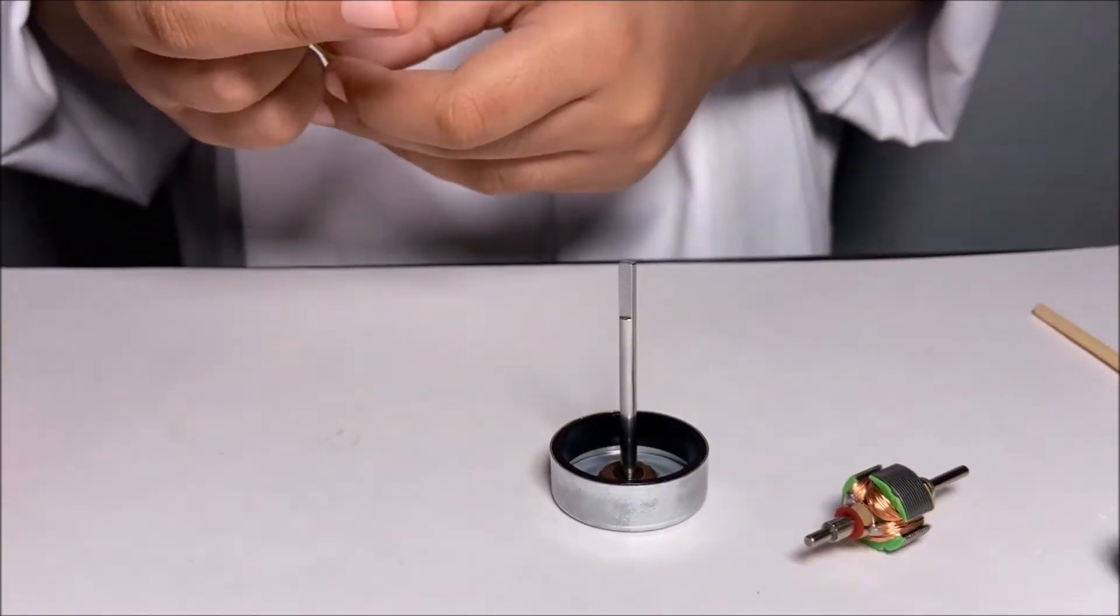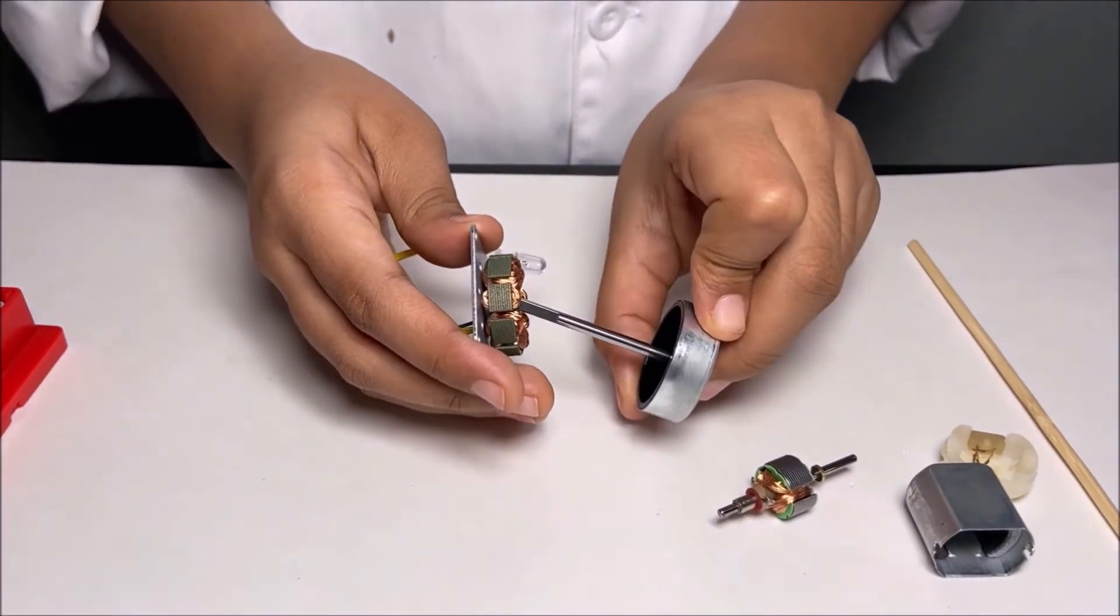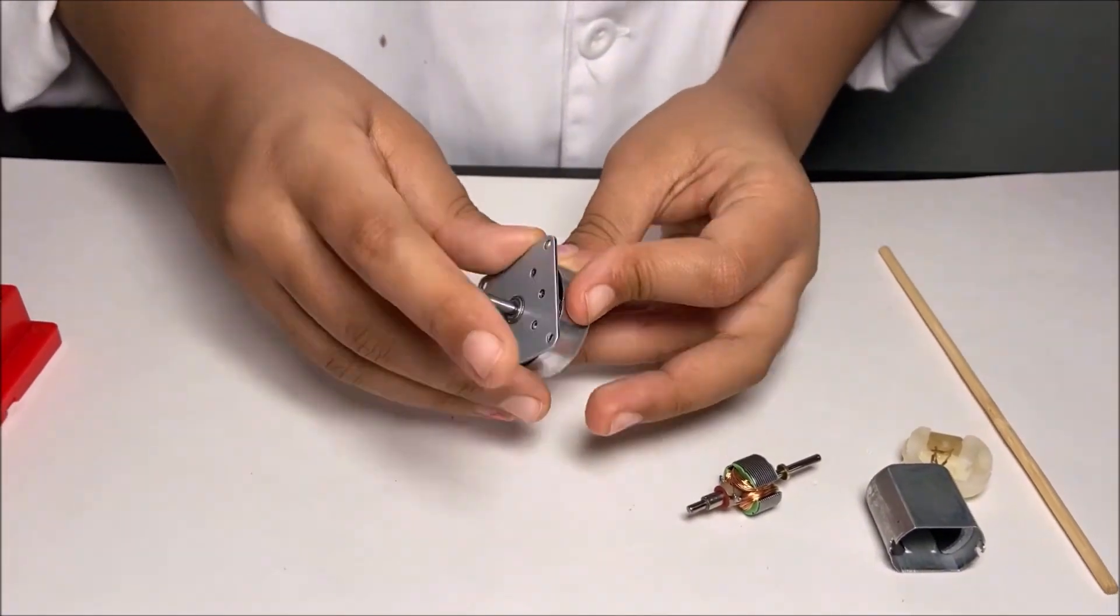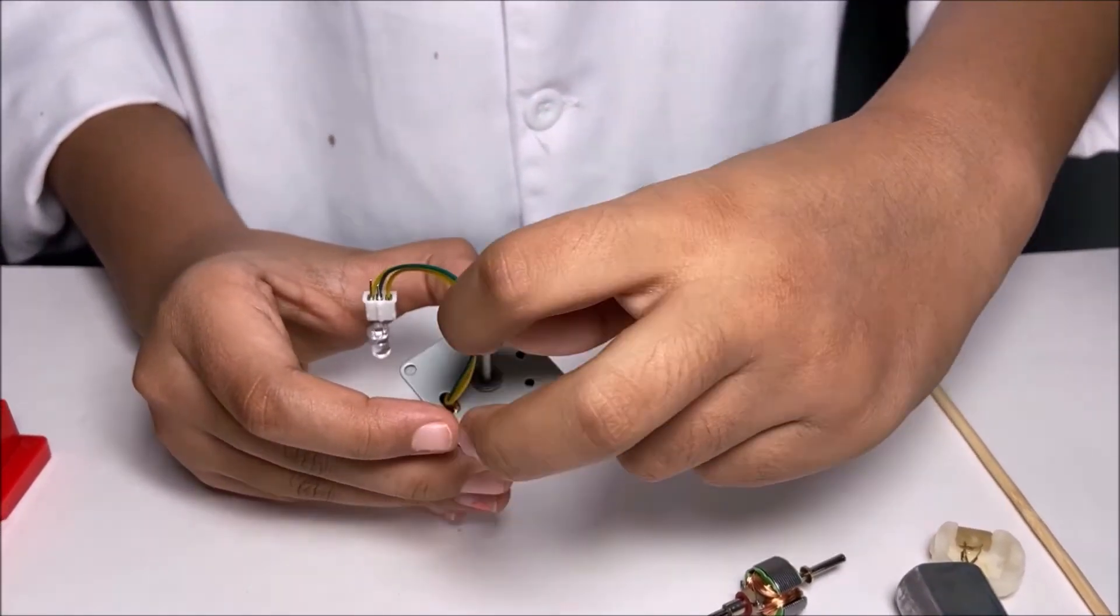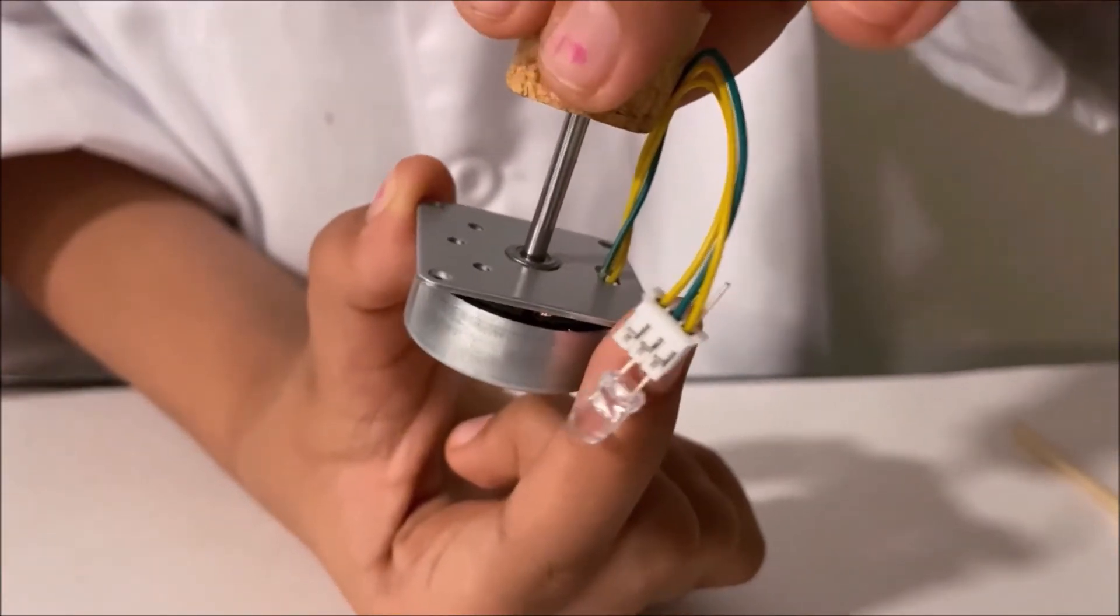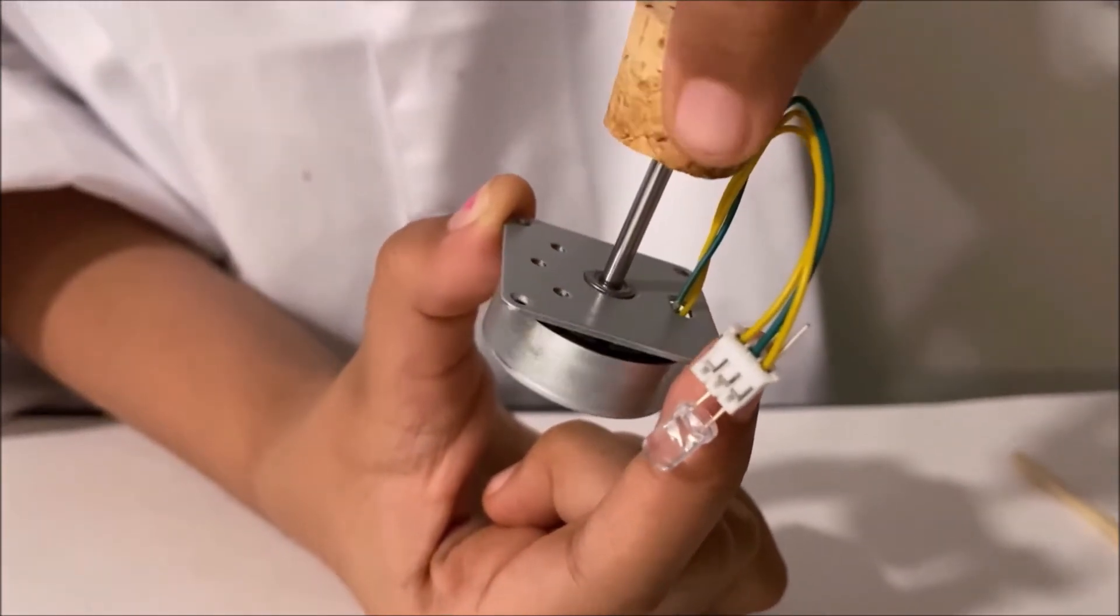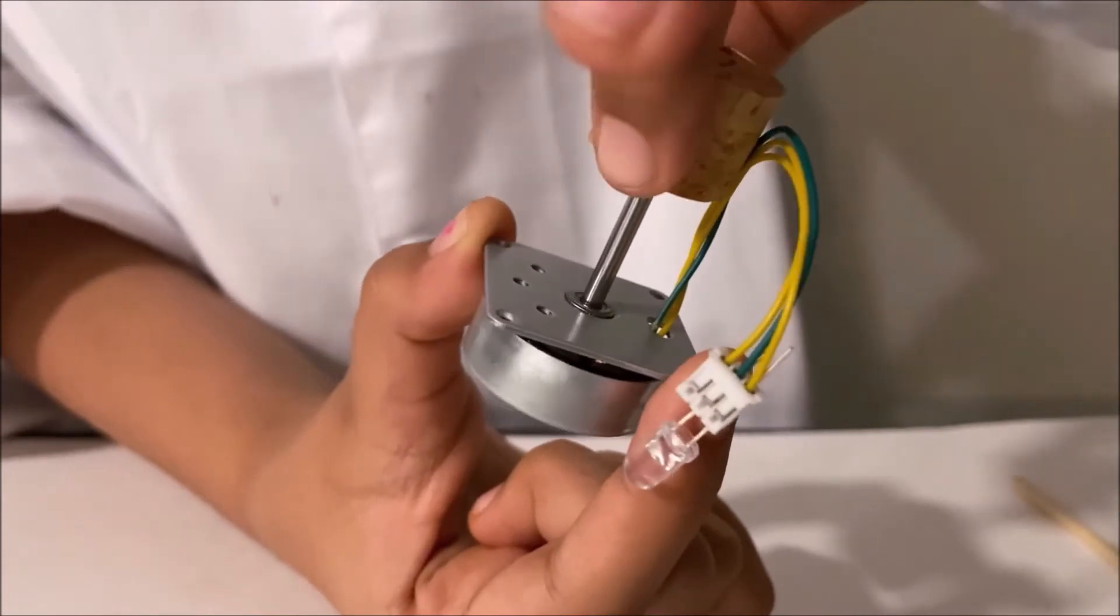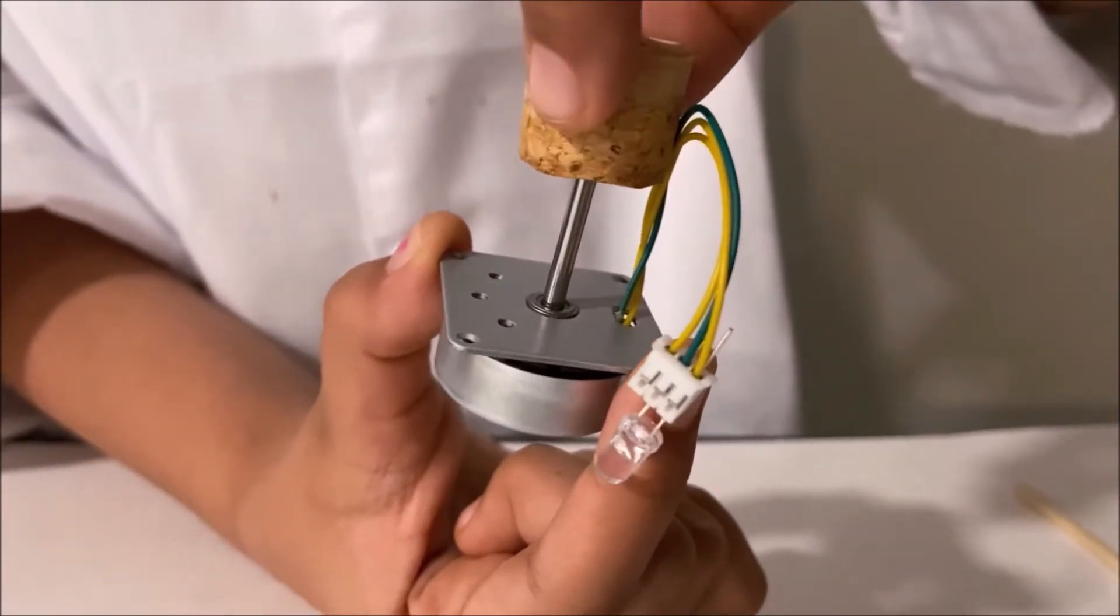Now I'm going to fix it back into the generator and I'm going to spin it slowly. You can see that it doesn't light up, so if I spin it slowly there's only a little bit of current.